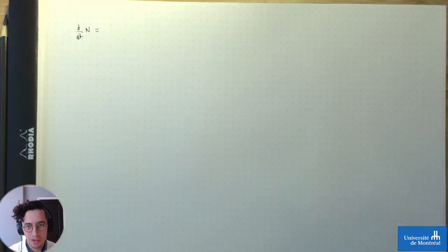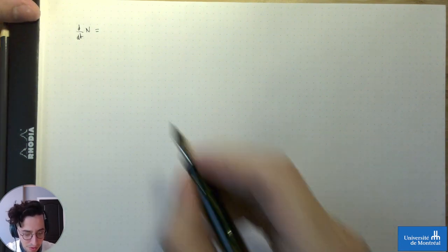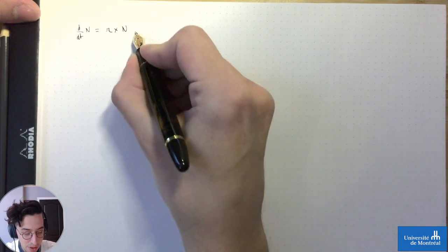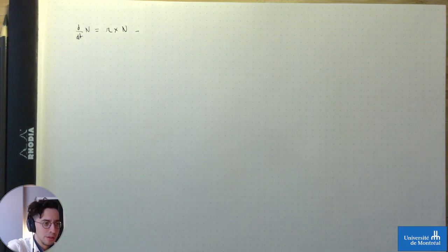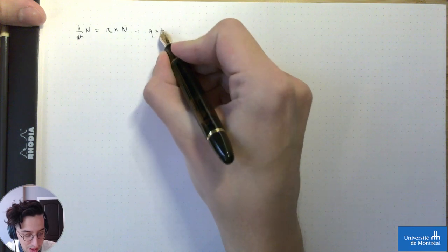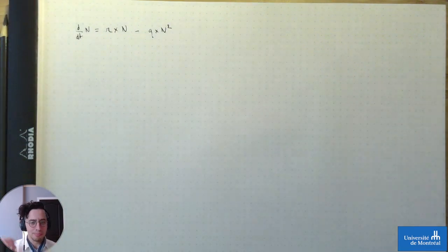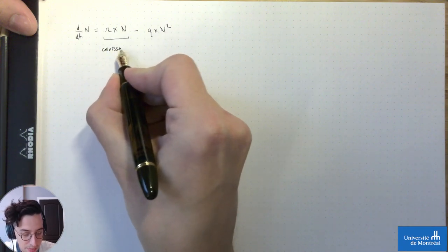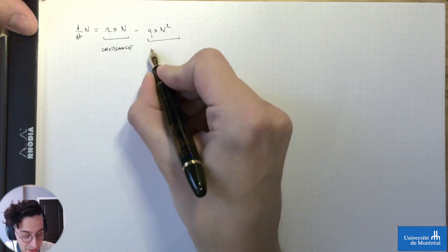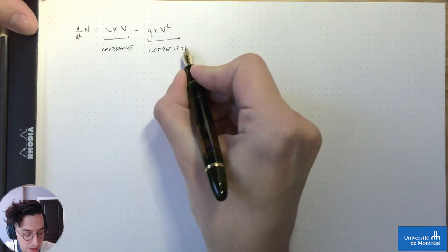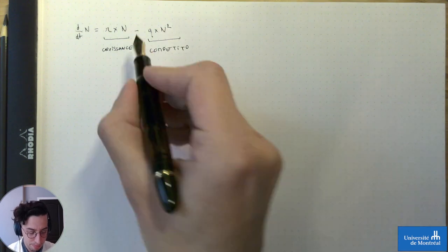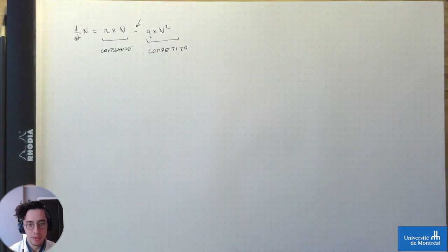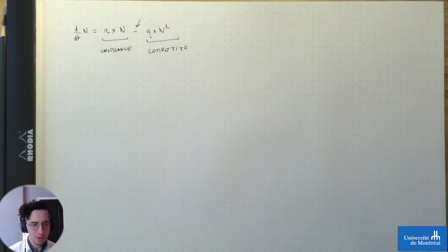Ce modèle est écrit de la façon suivante : c'est la dérivée de la taille de la population en fonction du temps, c'est le taux de croissance fois la taille de population moins un taux de compétition intraspécifique fois la taille de population au carré. Ce modèle a deux mécanismes : la croissance et la compétition. La relation entre ces deux mécanismes est négative. Le comportement du modèle va être déterminé par une balance entre le processus de croissance r×n et le processus de compétition q×n².